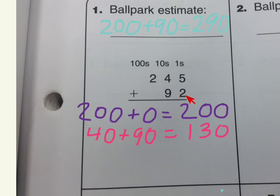And finally the ones place. We have 5 plus 2, and you should know 5 plus 2 is 7, but just make sure that that's lined up here in the ones place. And now you just add those 3 together, so 200 plus 130 plus 7.